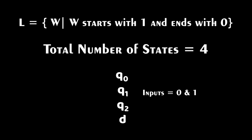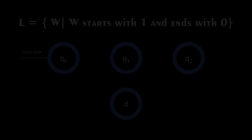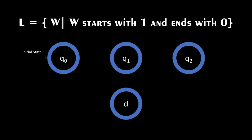We name the states Q0, Q1, Q2, and D. We start our initial state as Q0 and add transitions for Q0 for both inputs 0 and 1. Since W starts with 1, when 1 is input for the initial state we have a transition from Q0 to Q1. If 0 is the input, we transition to D and the program stops, since W should only start with 1.